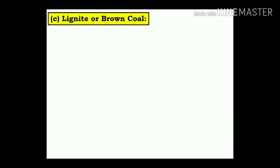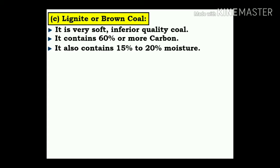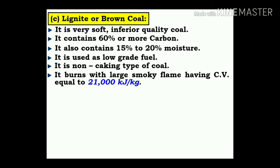Lignite or brown coal: it is very soft, inferior quality coal. It contains 60% or more carbon and also 15% to 20% moisture. It is used as a low-grade fuel. It is a non-caking type of coal and burns with a large smoky flame, having a calorific value equal to 21,000 kJ/kg.